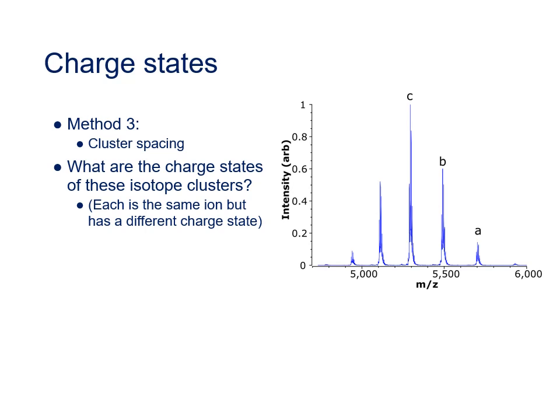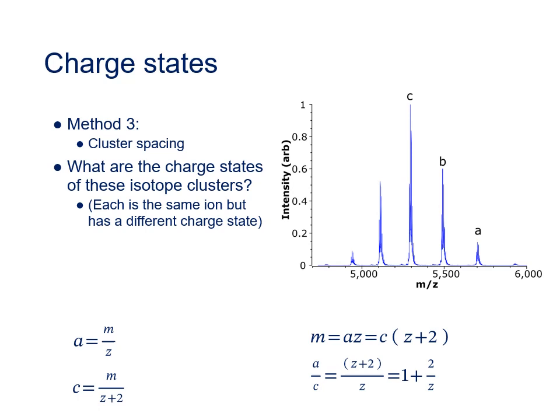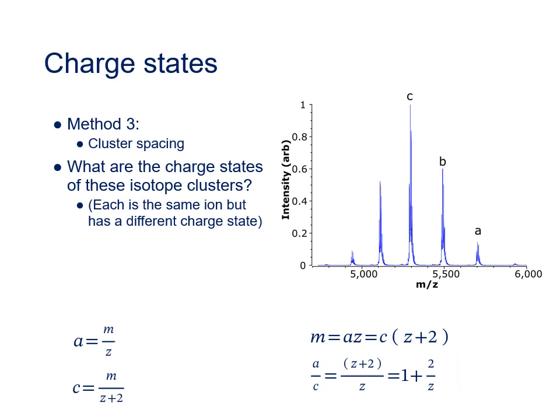It's always a good idea to repeat the calculation for a different pair of peaks in order to confirm that your initial charge state estimate was accurate. So let's repeat the process, but instead of using peak clusters A and B, we'll use A and C, and then we can repeat the same derivation again. The difference now, of course, being the charge state of C should be two higher than A. If we now go through the same process of solving for M and rearranging as we did in the last example, we get a very slightly different final equation. However, if you solve this for Z, you should get the same Z value as you got when you were looking at peak clusters A and B. If you don't, then either something's gone wrong in your calculation or they're not members of the same charge state distribution.